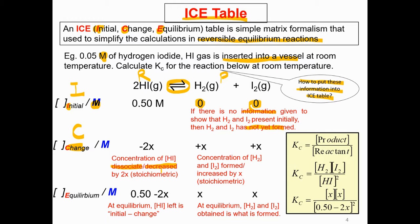During the process, it starts to change. The reactant hydrogen iodide starts to decrease or dissociate, but we don't know how much it dissociates. We do know the stoichiometric coefficient is 2 from the balanced equation. For the products hydrogen and iodine, the stoichiometric coefficient is 1, so we add plus X. We use minus for the reactant because it decreases to form product, so it is minus 2X.